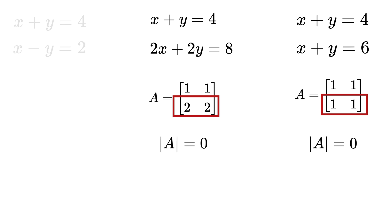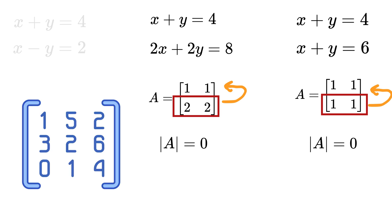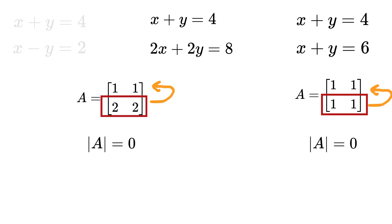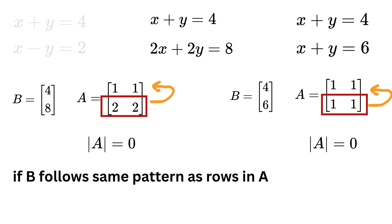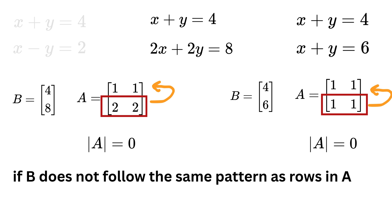If one row in matrix A is linearly dependent on the other rows — for a 3×3 matrix, dependent on the other two rows — then the equations are not giving new information; they are just repeats of each other. This makes the determinant zero and the system can have either infinitely many or no solutions. To find which one, we must also check the constants in matrix b. If the constants follow the same linear dependency as the rows in A, the equations overlap giving infinitely many solutions; if not, the lines or planes are parallel, giving no solution.